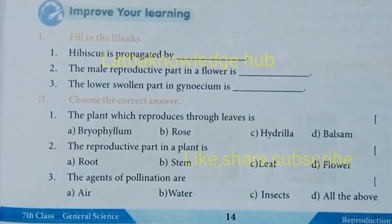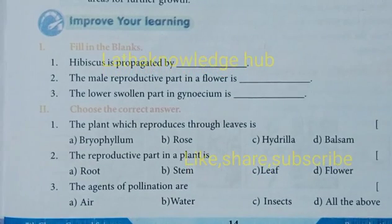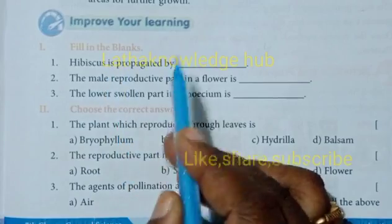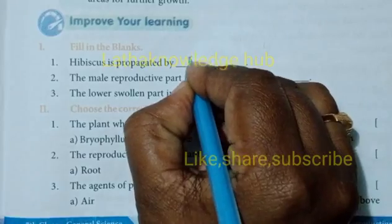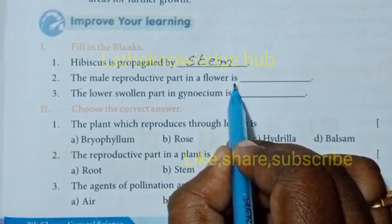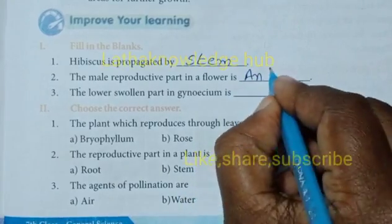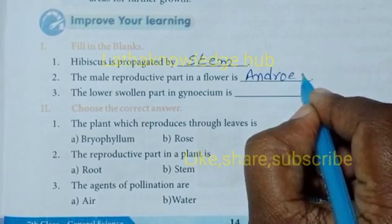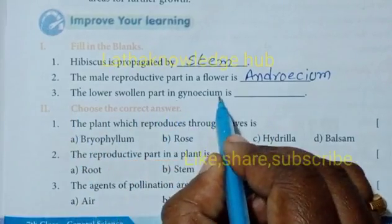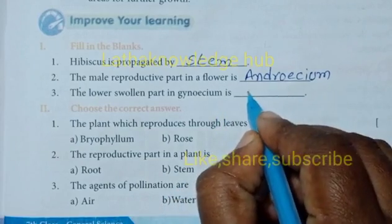Hi children, welcome to our channel. Today we are going to discuss 7th class general science, semester 2, lesson 7 - reproduction in plants. Fill in the blanks: Hibiscus is propagated by stem. The male reproductive part in a flower is androecium. The lower swollen part in gynoecium is called ovary.